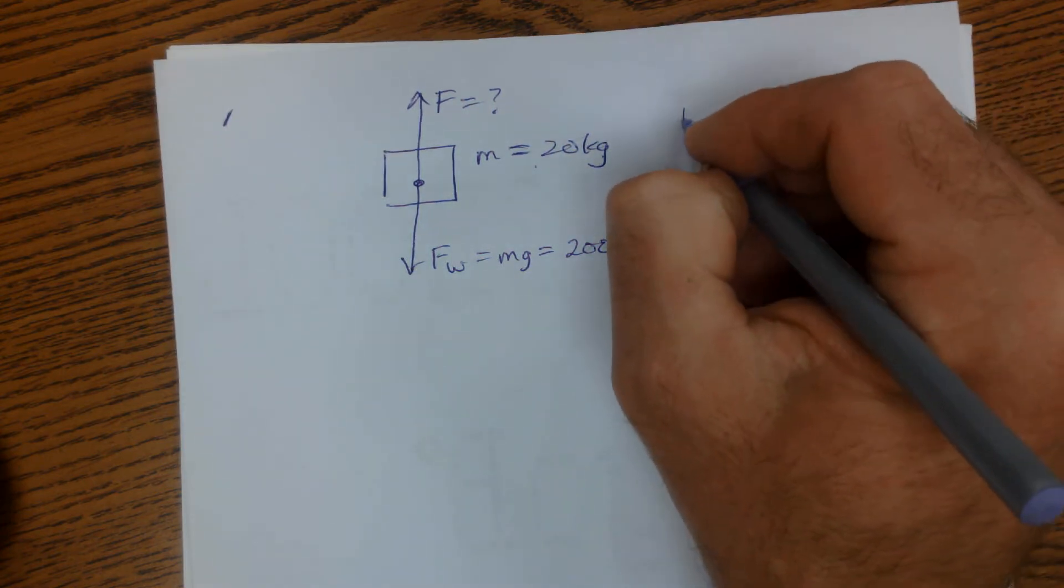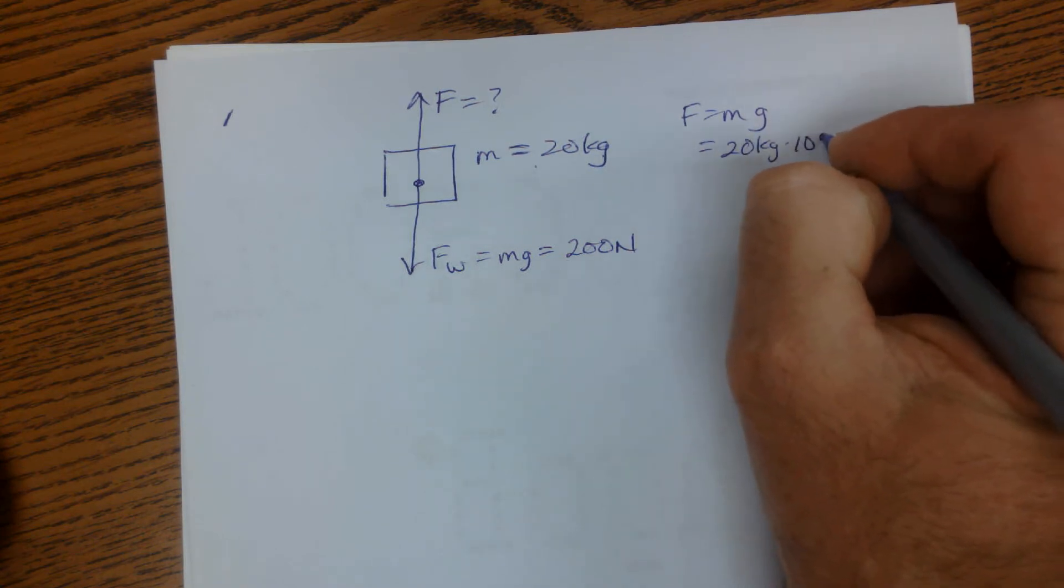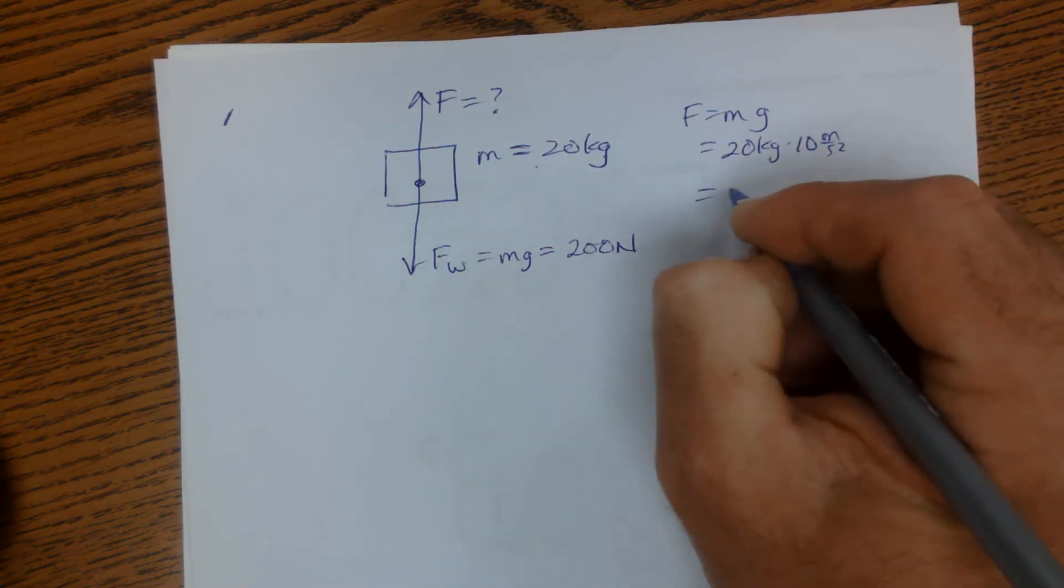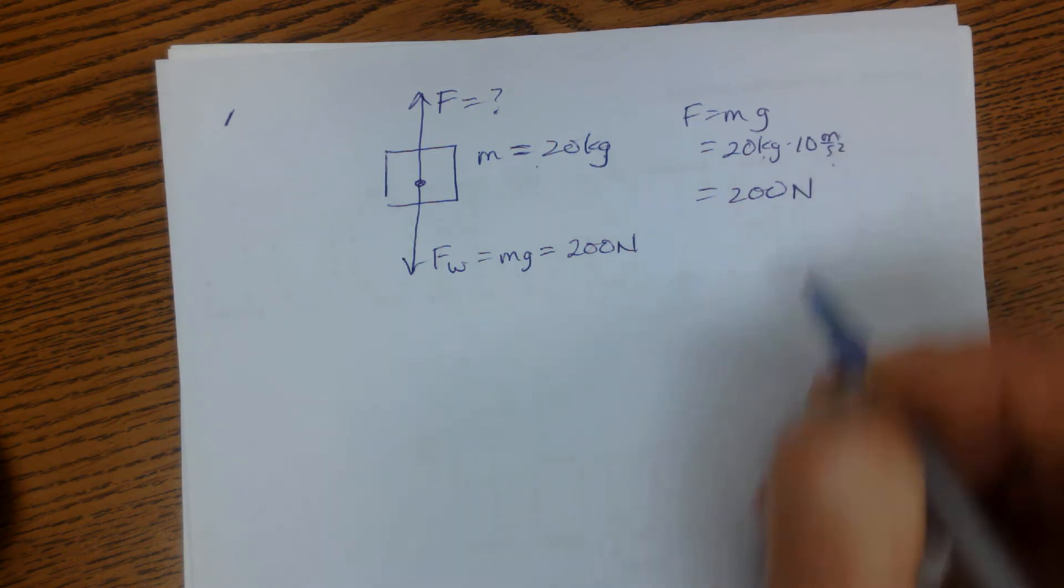And again, 20 kilograms times 10 meters per second squared is going to be 200 kilogram meters per second squared, which is newtons.